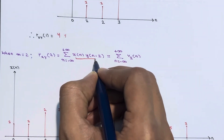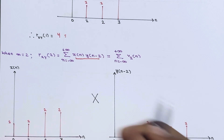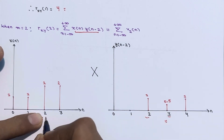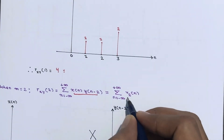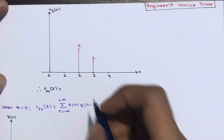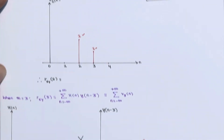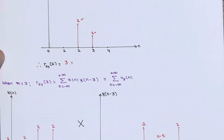When m = 2, we need x[n] · y[n - 2]. Take y[n - 1] and shift one more unit to the right to get y[n - 2]. Common instances are at n = 2 and n = 3: 2 × 1 = 2 and 2 × 0.5 = 1. The product sequence v_2[n] has value 2 at n = 2 and 1 at n = 3. Summing: 2 + 1 = 3, so rxy[2] = 3.